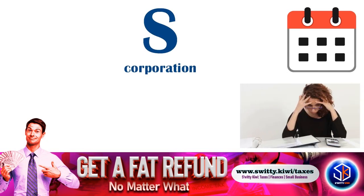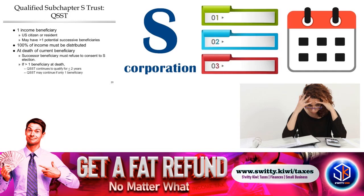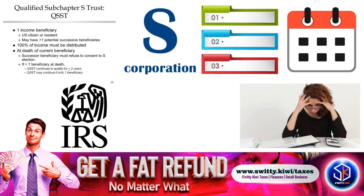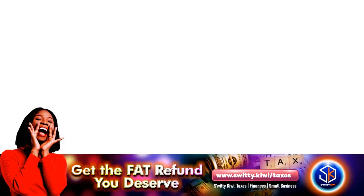If you are a corporation that wants to elect QSST — qualified subchapter S trust — you are able to proceed that way, but this only applies to the QSST. Steps three and four involve late corporate classification election representations. When you ask the IRS to approve your Form 2553 S-corp election, make sure you can substantiate all the information you claim on your tax form.